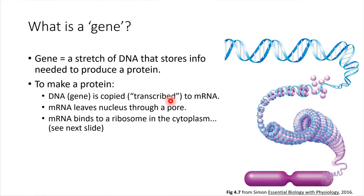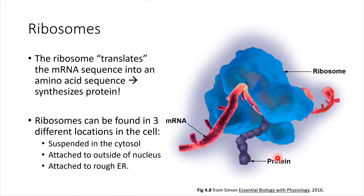When a gene gets transcribed, a little machine comes along and reads the sequence of nucleotides, and it makes a complementary strand of RNA — ribonucleic acid. That RNA molecule is then able to leave the nucleus through a nuclear pore and go out into the cytoplasm to bind to a ribosome. Here's a model of a ribosome: it has a large subunit and a smaller subunit below, and what it does is translate the message on that RNA strand.